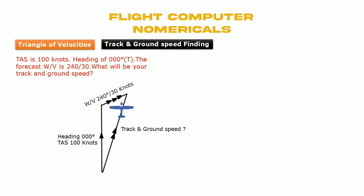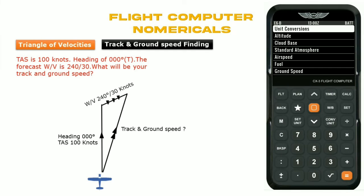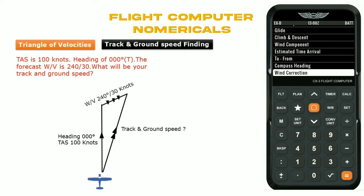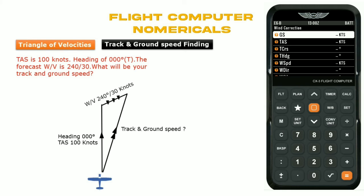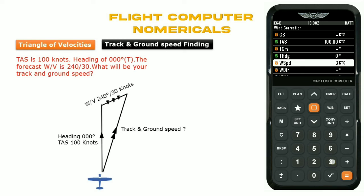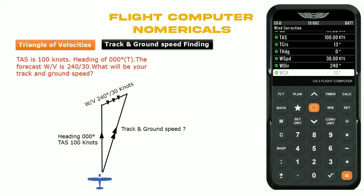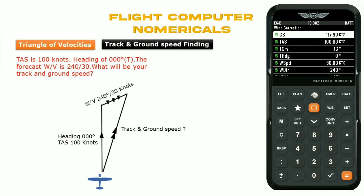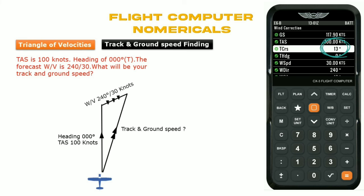We'll use the flight computer to solve this. Go to wind correction column. We need to find ground speed — TAS is given as 100 knots, heading is 360 degrees, wind speed is 30 knots, wind direction is 240 degrees. After entering the values, ground speed is 117 knots (approximately 118) and course (track) is 13 degrees.